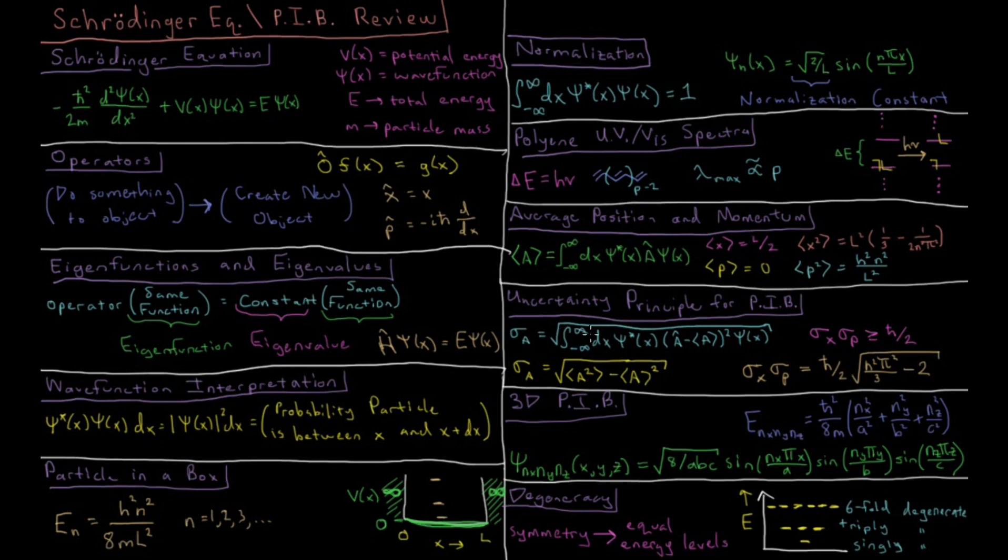The formula for how we calculate the uncertainty in an operator or an expectation value is done by the following formula. That's basically the operator minus its expectation value squared acting on the wave function times the complex conjugate and then integrated over all space and taking the square root to go from the variance, sigma squared, to the standard deviation, sigma.